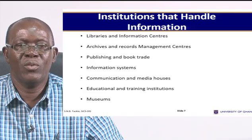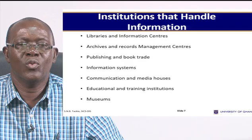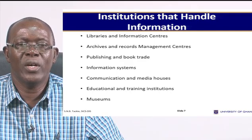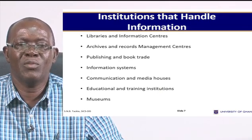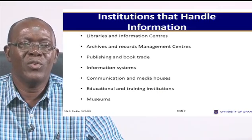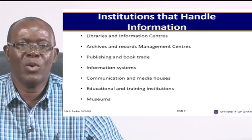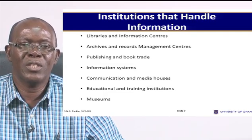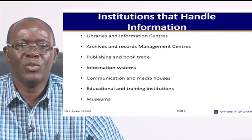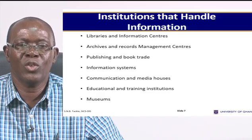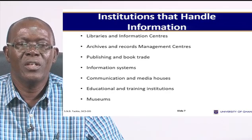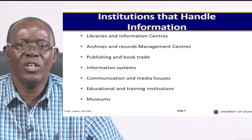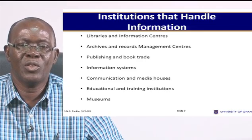Publishing and the book trade refers to the publishing industry, where authors who create books send their manuscripts to be published, then sold and distributed to those who need them. Information systems refers to computerized information systems — every organization has an information system or management information system dealing with information generated within and outside the organization. Communication and media houses include newspapers, whether electronic or print-based, as well as television stations. Educational and training institutions are where information professionals are trained. Museums are where artifacts are kept for research and viewing.